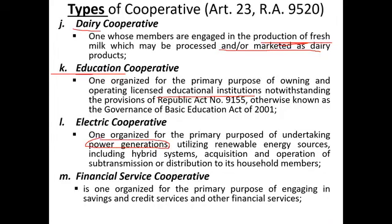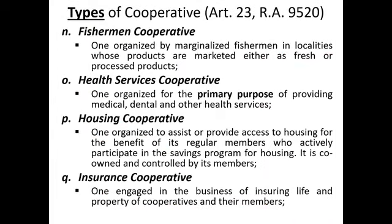A financial service cooperative is one organized for the primary purpose of engaging in savings and credit services and other financial services. A fisherman cooperative is one organized among marginalized fishermen in localities whose products are marketed either as fresh or processed products — from the word itself, marginalized fishermen.